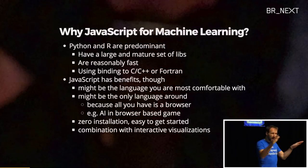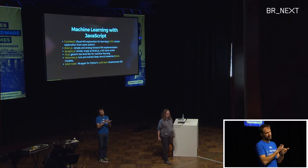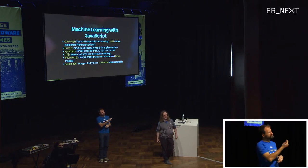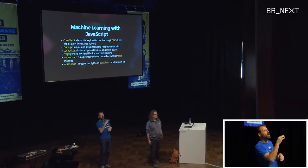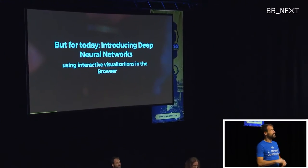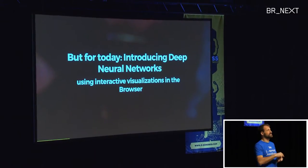You can make machine learning run everywhere by combining JavaScript with visualizations. There are a lot of machine learning JavaScript libraries — we won't go through them today, but they're good references if you want to study more. Today we're going to look into deep neural networks using interactive visualizations.